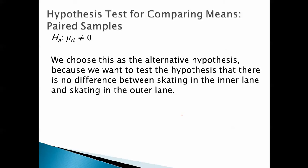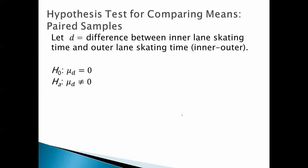So we choose this as the alternative hypothesis because we want to test the hypothesis that there is no difference between skating in the inner lane and skating in the outer lane. We're not testing the hypothesis that inner is better than outer, or vice versa. This is our null and alternative hypothesis.